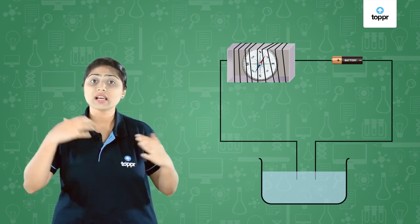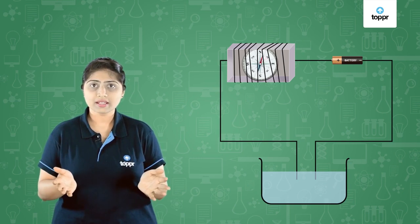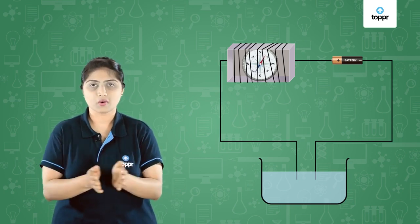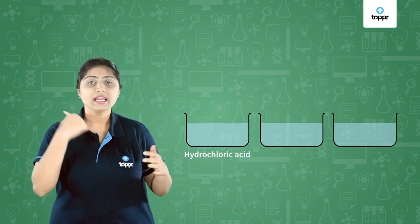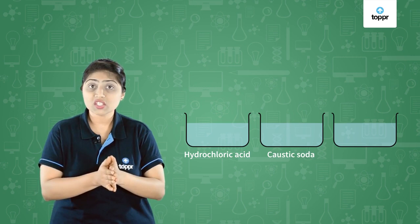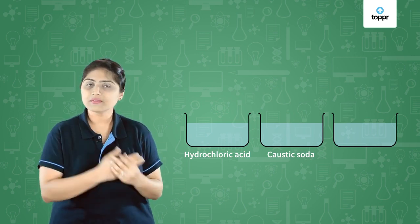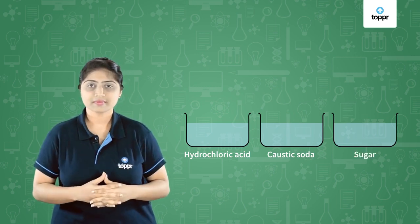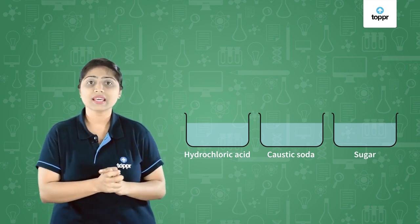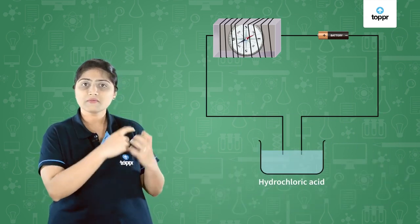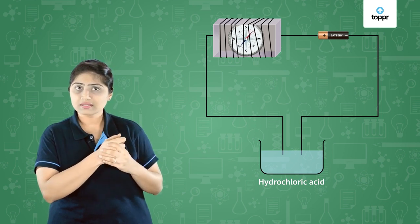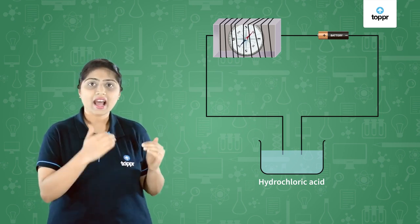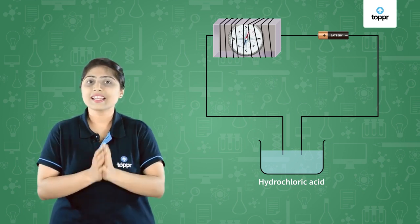Let's dissolve different things in distilled water and see if their solutions conduct electricity or not. We have three beakers of distilled water. In the first beaker we add dilute hydrochloric acid, in the second we add caustic soda which is a base, and in the third we add sugar. When we immerse the tester wire in the first beaker, do we see deflection in the needle? Yes! That means hydrochloric acid solution does conduct electricity.